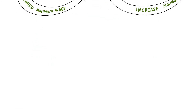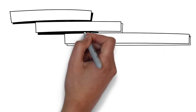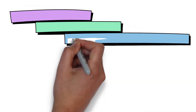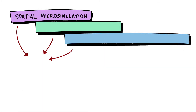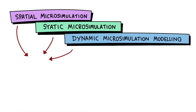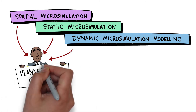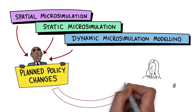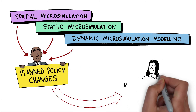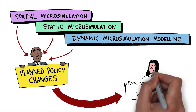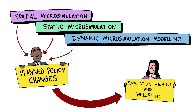In Cypher, we're using all three techniques — spatial, static and dynamic microsimulation — to understand better the causal relationships between planned policy changes and population health and well-being.